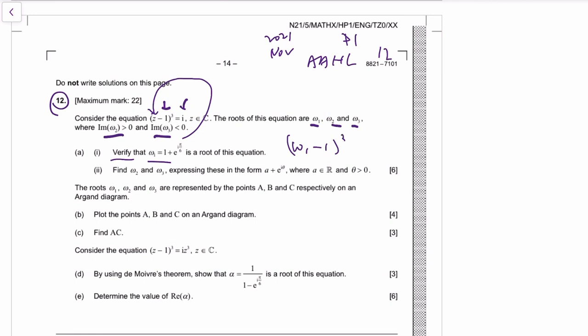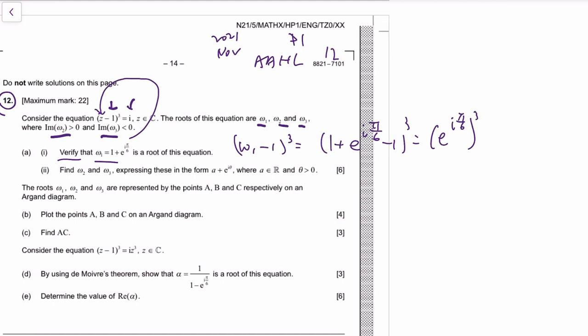So omega 1 minus 1 cubed—I substitute it to the left hand side—is 1 plus e to the i pi over 6 minus 1, cubed, which is e to the i pi over 6 cubed.